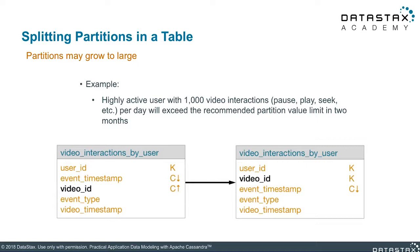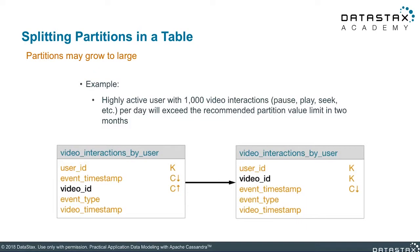Our table defined here is the video interactions by user table, which uses the user ID as the primary key, and the event timestamp and video ID as the clustering columns. This means that each partition represents a user, and each CQL row represents a unique interaction for that user. With so many interactions done by this highly active user, the size of this partition can easily exceed the recommended guidelines for partition size within two months.